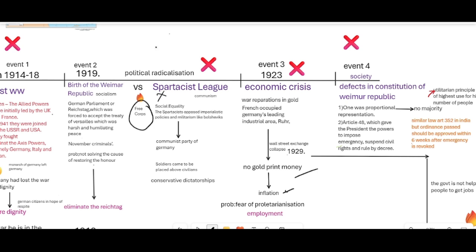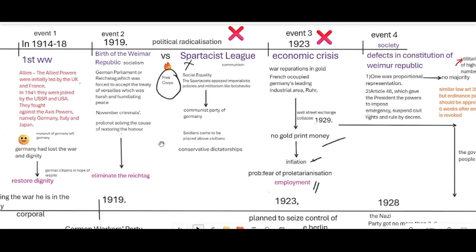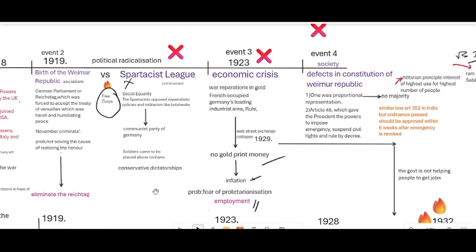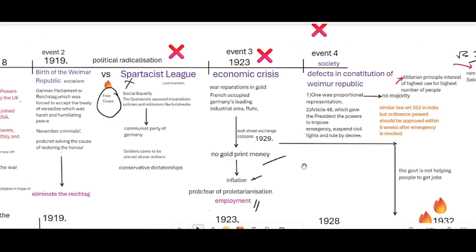Employers feared proletarianization and the only solution was to provide employment. Who would give this employment, eliminate this suffering, and restore dignity? These were the questions running in German citizens' minds. The fourth event was the defects in the Weimar Republic constitution — only proportional representation with no majority, and Article 48, which gave the president the power to impose emergency, suspending civil rights and ruling by decree, which was against democratic principles.